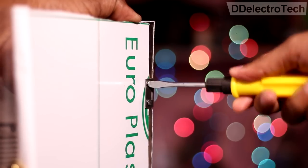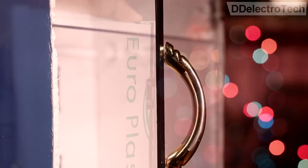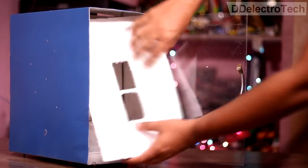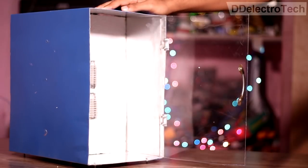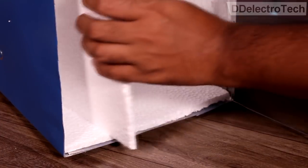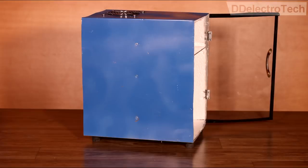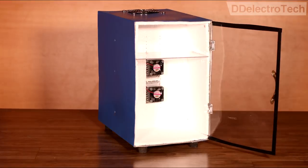Then I have added the hinge and the handle one by one. And lastly, I have added thermocol cutting on the inner wall of the cabinet, so that the outer temperature doesn't affect the internal environment.